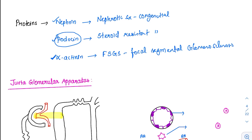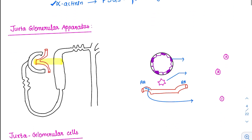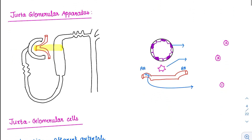Now coming to the second part, that is the juxtaglomerular apparatus. The term 'juxta' means nearby. There is a group of three structures which are functioning together, located very close to the glomerular membrane. That is why it is called the juxtaglomerular apparatus.